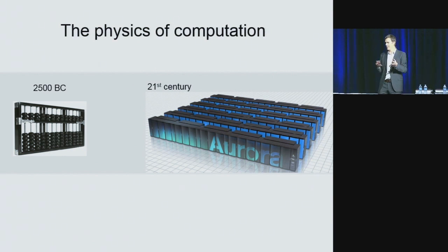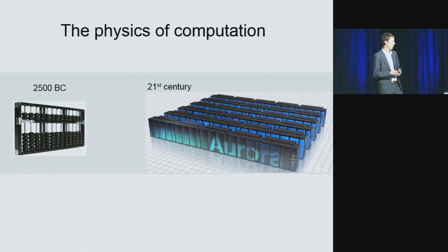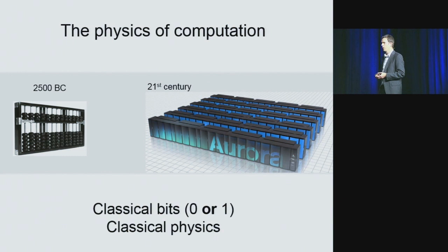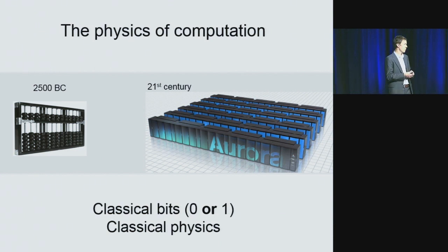In a sense, there is really no comparison between the abacus and a modern supercomputer. But from a physics point of view, we observe that both machines obey the classical laws of physics — Newton's laws, Maxwell's equations.